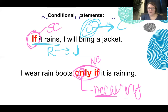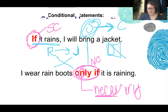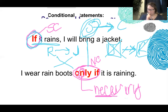Now let's think about what our contrapositive is. We have to flip it and then reverse it. So if I do not have a jacket on, that means it's not raining. Because 'if' introduces the sufficient condition.